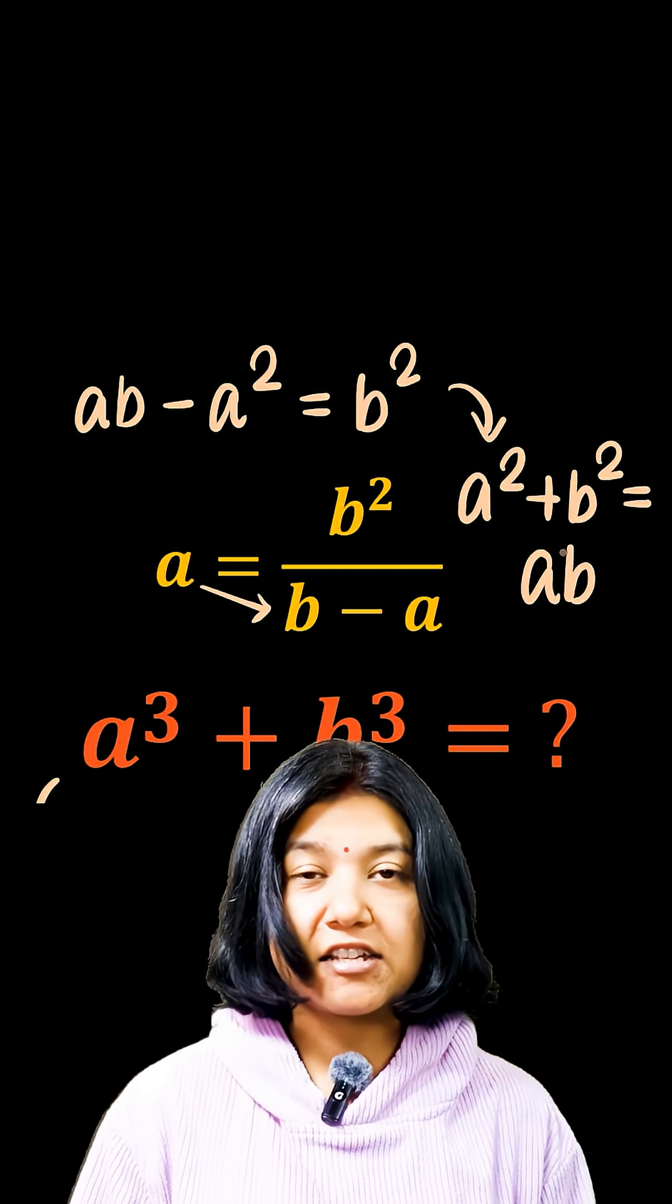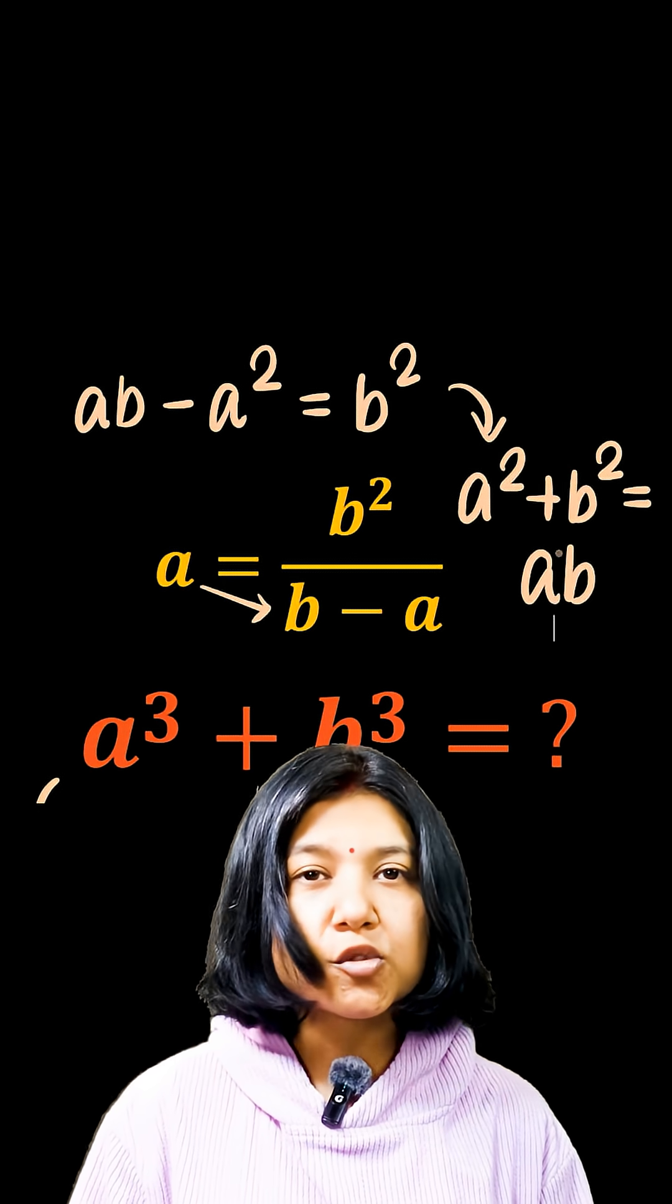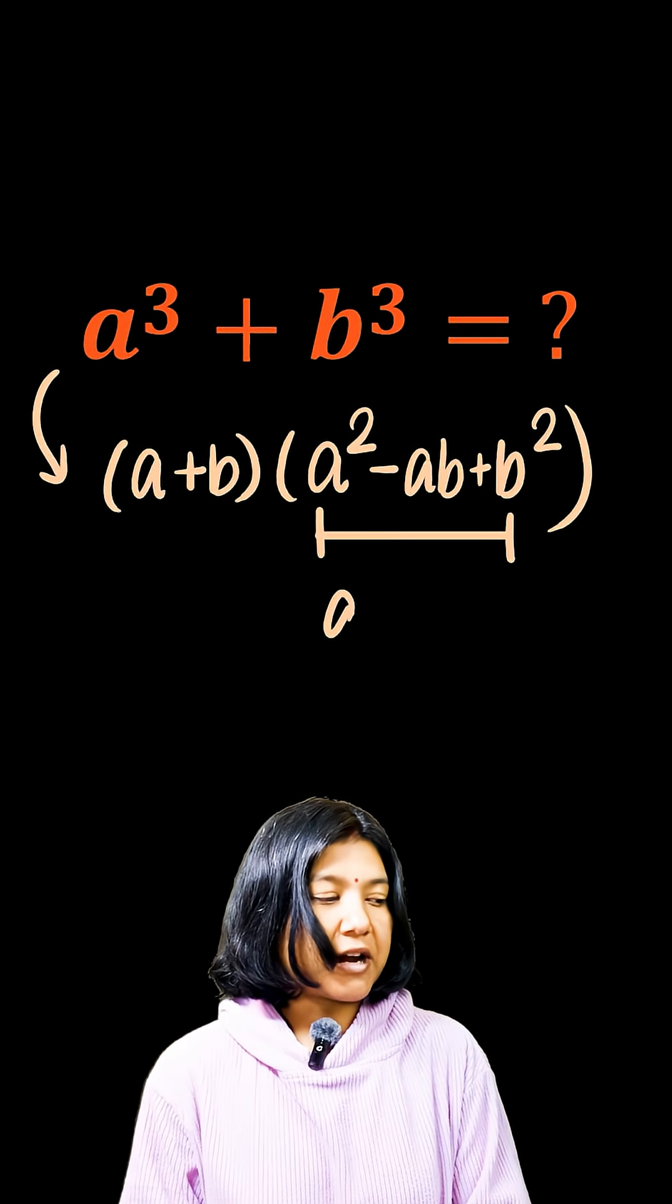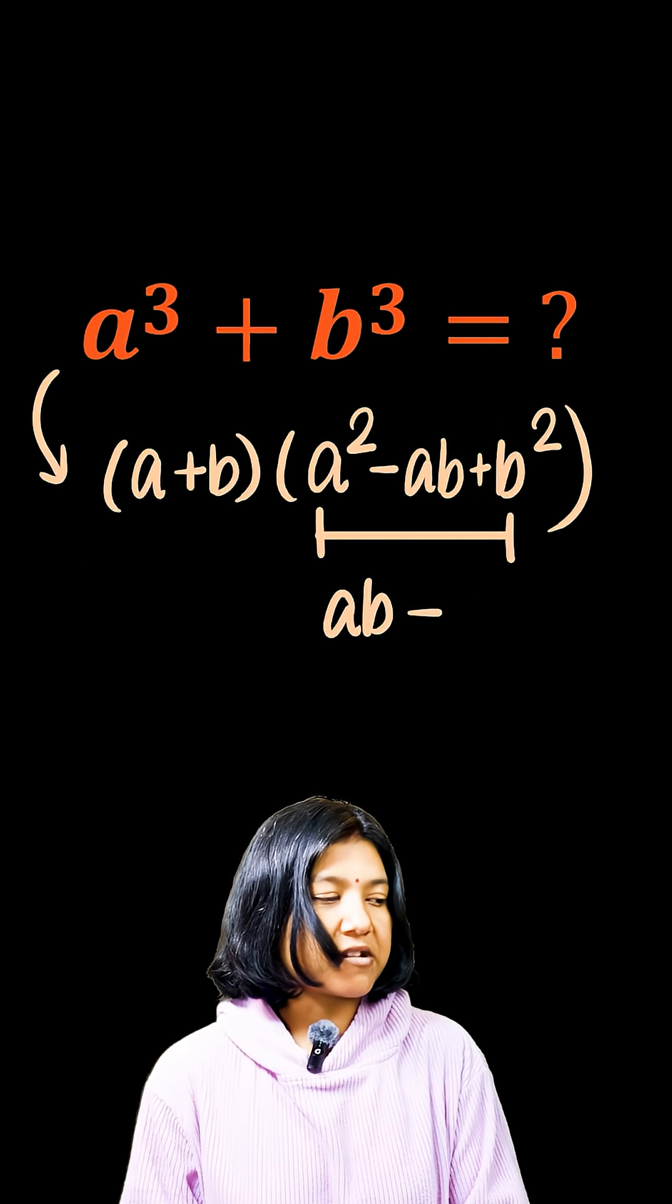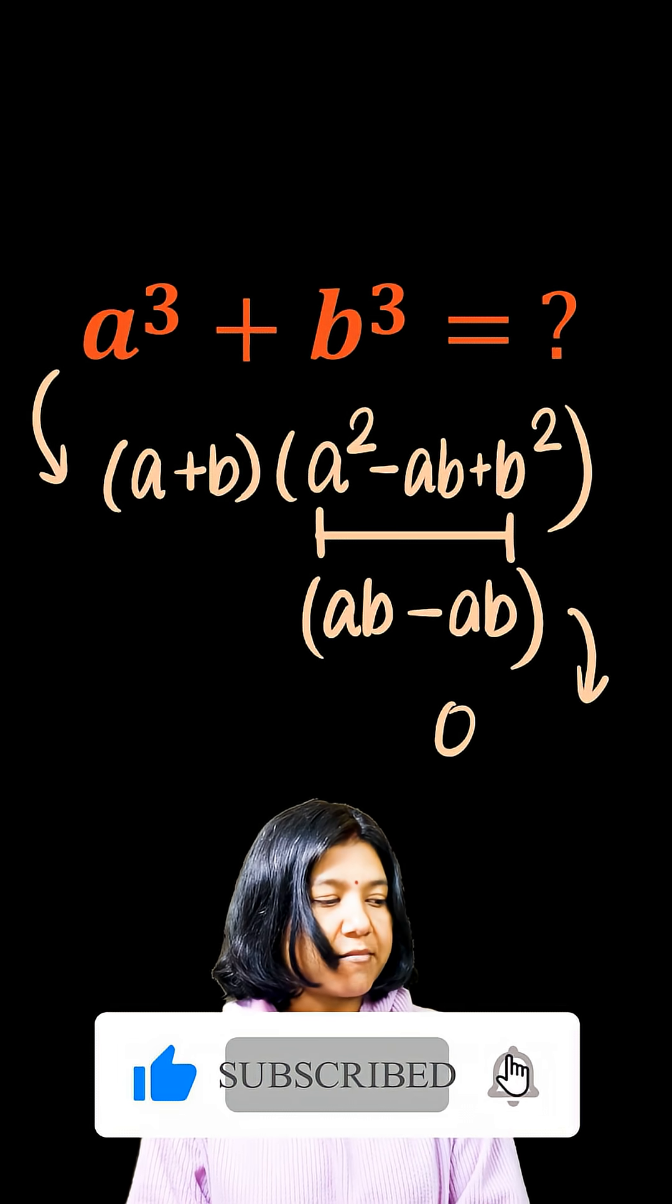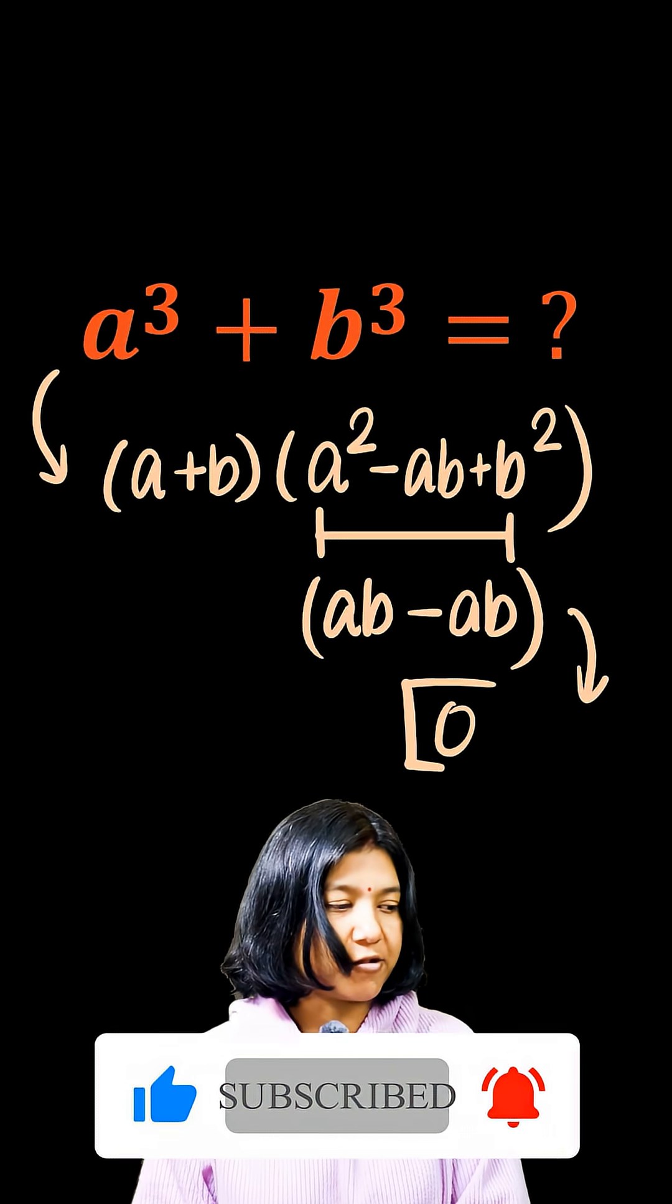This gives you a clear idea that instead of a squared plus b squared, I can go ahead and write ab. What happens if I do so? If I write ab instead of a squared plus b squared, this bracket entirely becomes zero, giving me zero times something. The answer is always zero.